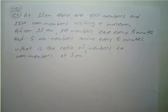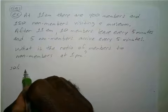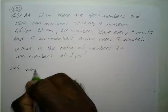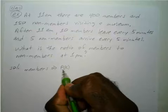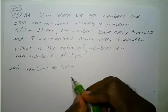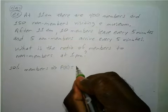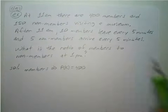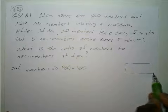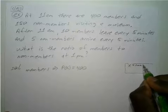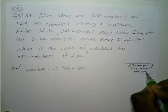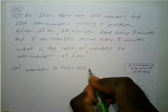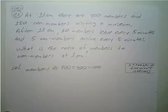Assuming you've paused it and worked this out, let's go ahead and verify. Just like before, we're going to set up our two equations. For the members, we'll make that p of x. There were 400 at 11 a.m., and 10 leave every five minutes. If we let x equal the number of five-minute intervals, then that's minus 10x for the members.